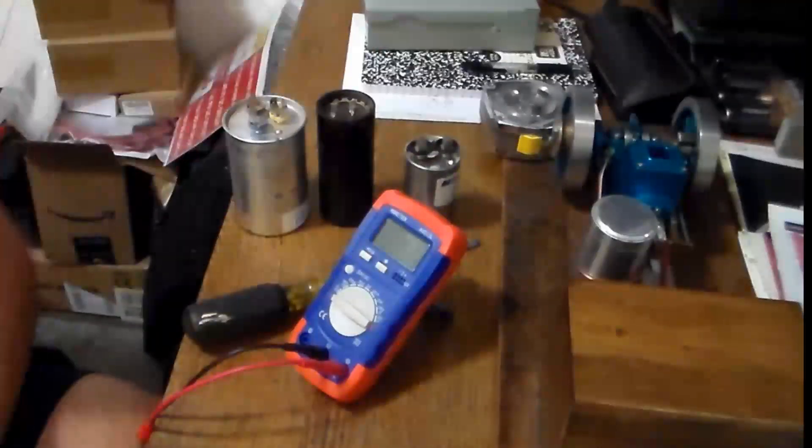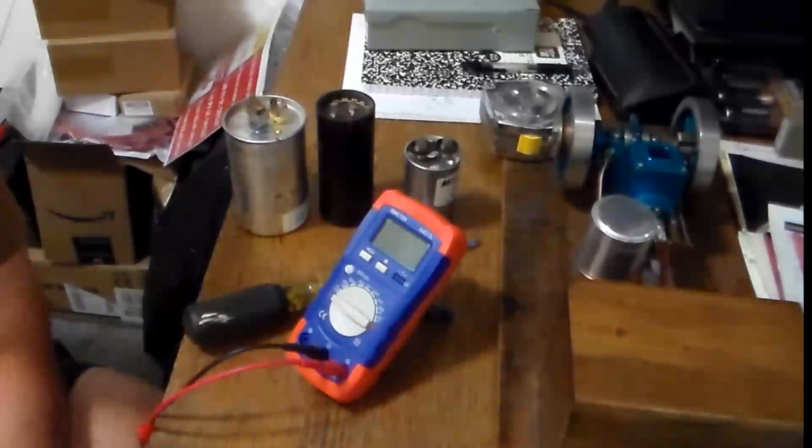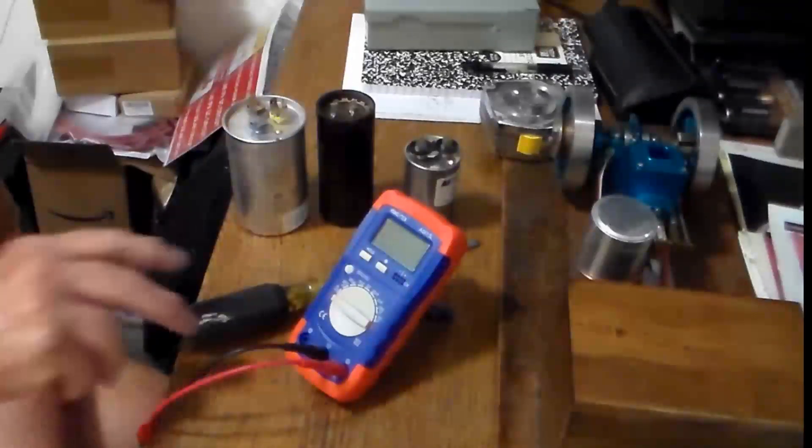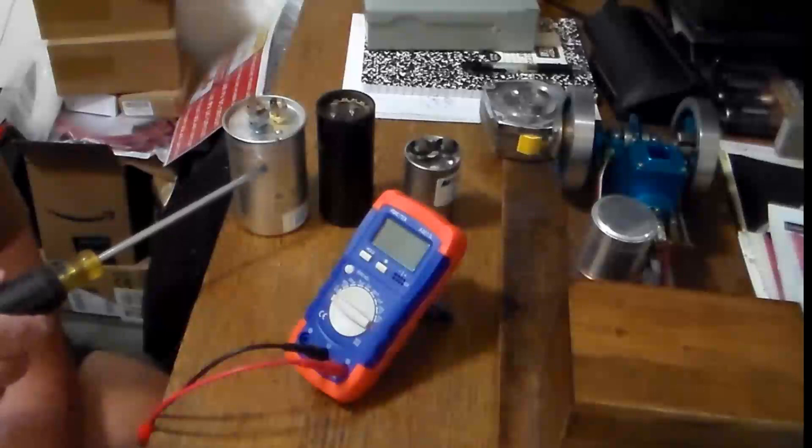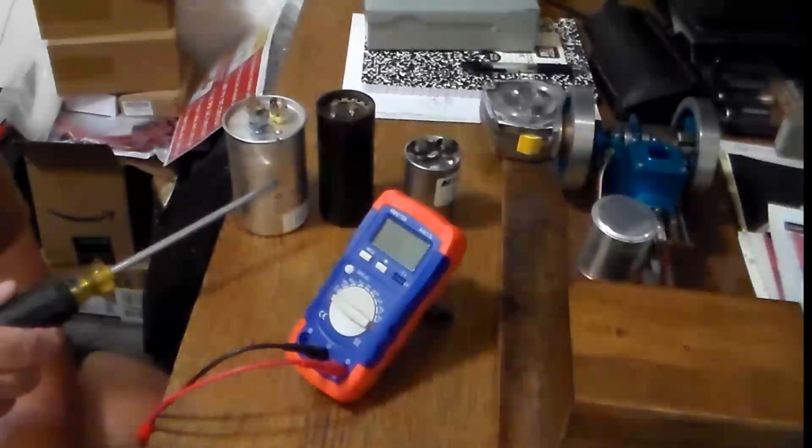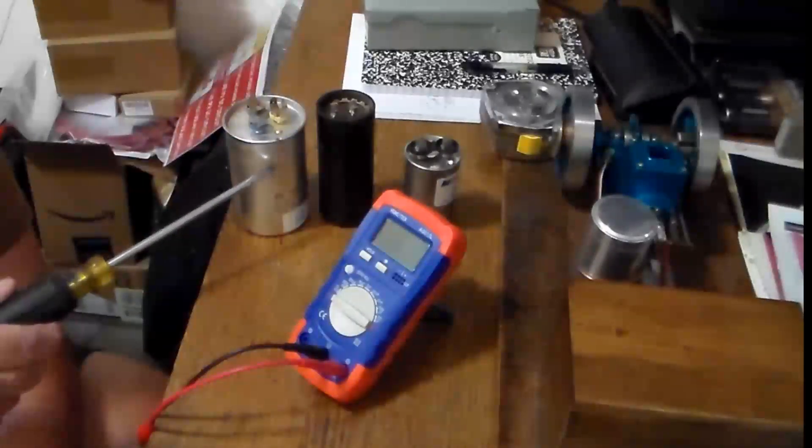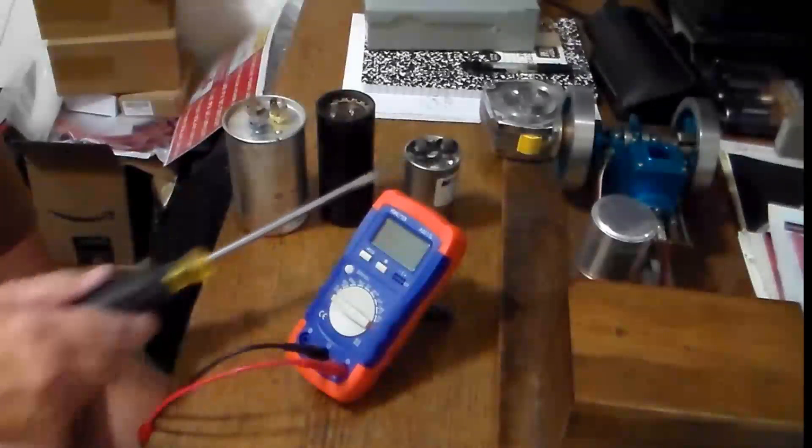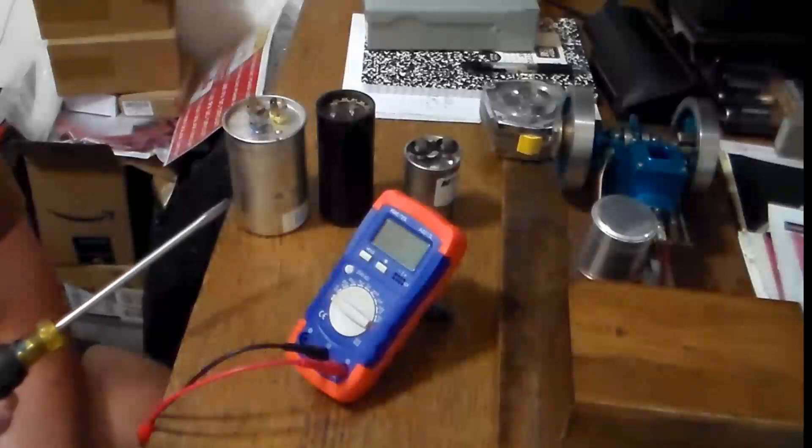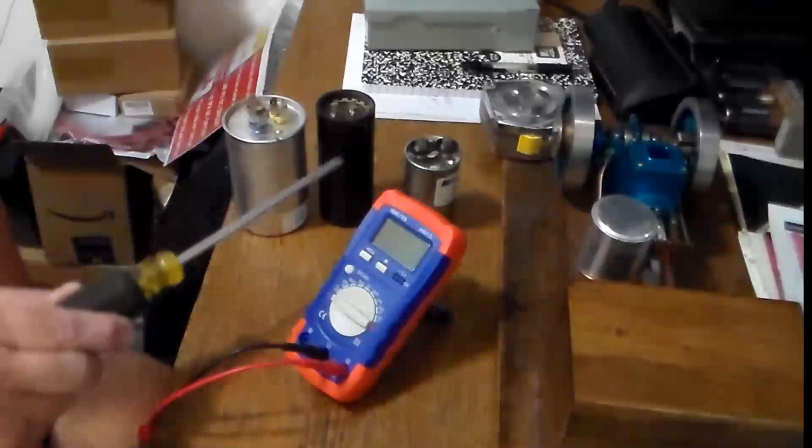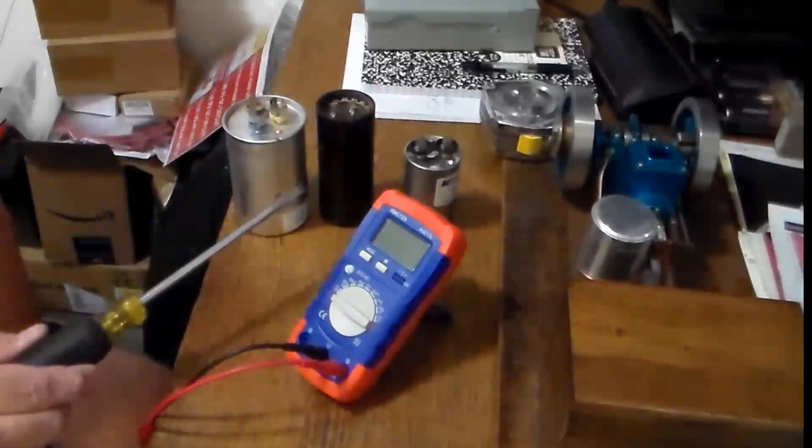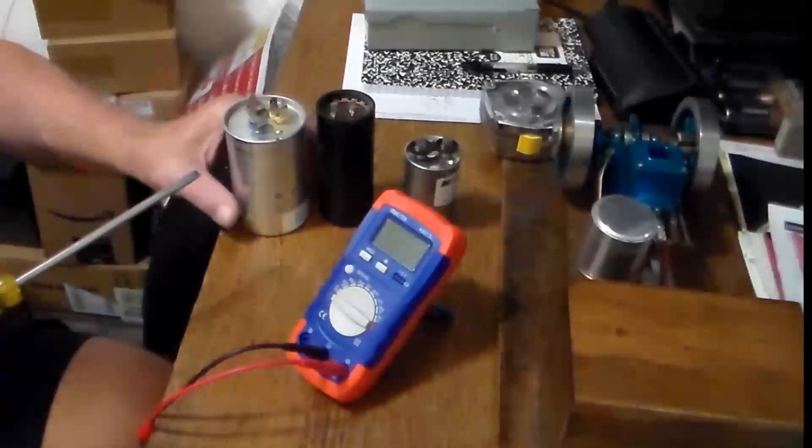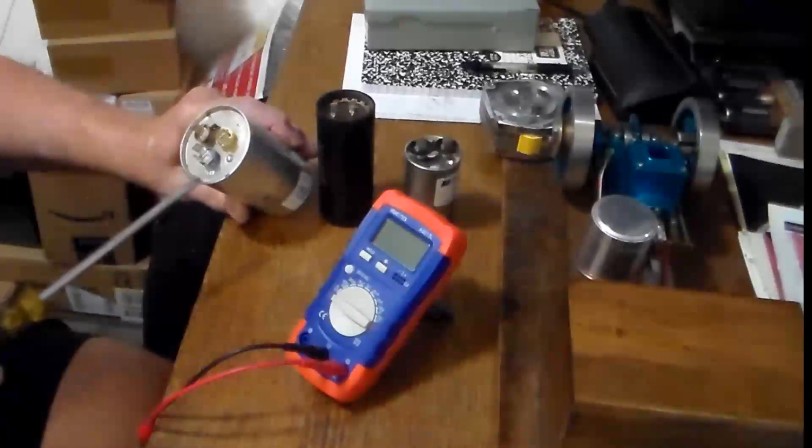Alright, I have three different capacitors here that we can run a test on. This one worked on an air conditioner, about a two and a half to three ton unit. This was an air compressor, and this was on another air compressor. So you can see that there are some differences in the design and layout of these.